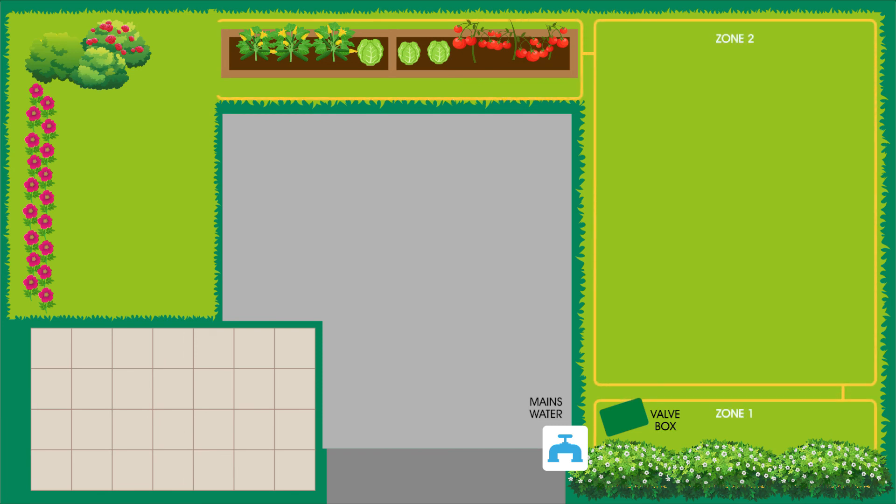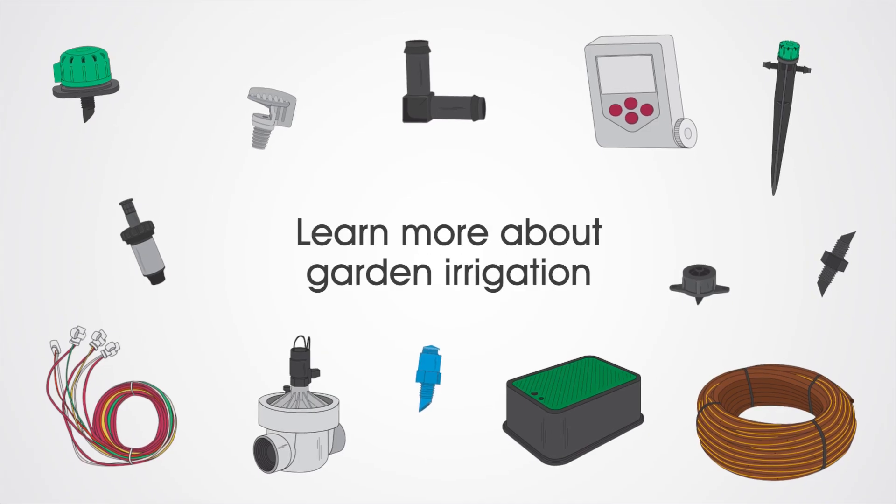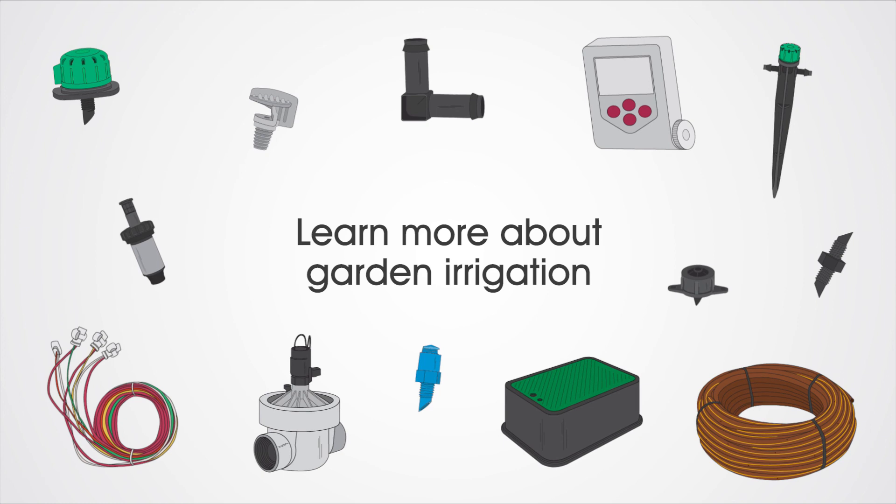Sometimes you may need to lay cable pipe underground and access your electricity. See our other videos to learn more about garden irrigation.